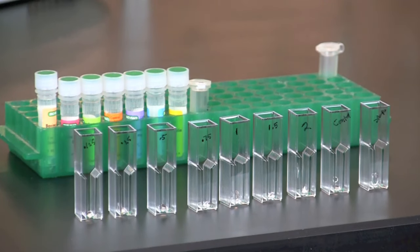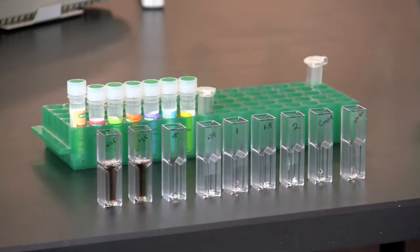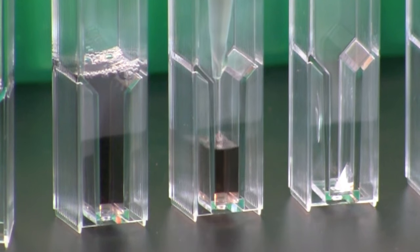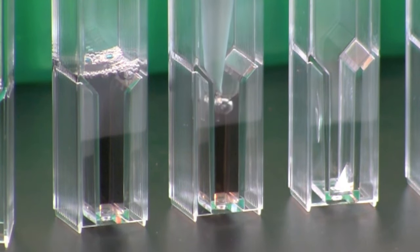Now you are ready to add the Bradford reagent to all of the cuvettes you have prepared, including the sample and control. Add 1 milliliter of 1x Bradford reagent to each of the cuvettes. Mix completely by pipetting up and down with the micropipet.